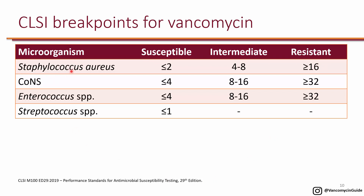For Staphylococcus aureus — the number one reason for using vancomycin — the susceptibility breakpoint is set at two, so an MIC of two or less is considered susceptible. If the MIC comes back as four or eight, those are considered intermediate. For coagulase-negative Staphylococcus, an MIC of four or less is considered susceptible. The same is true for Enterococcus species. For Streptococcus, the breakpoint is one or less. These are the latest 2019 CLSI breakpoints, which are updated annually, though these numbers haven't changed in years.